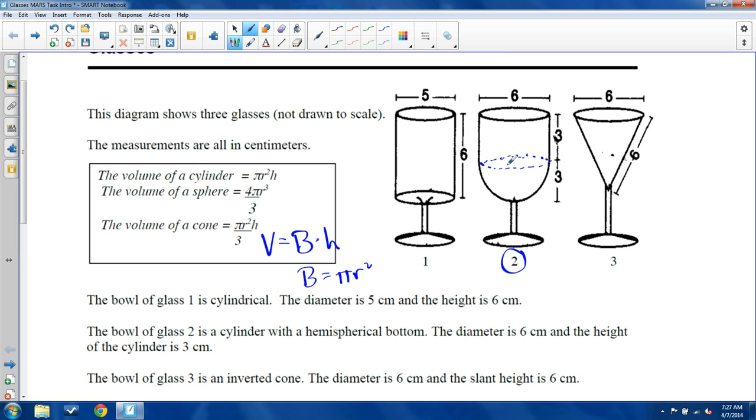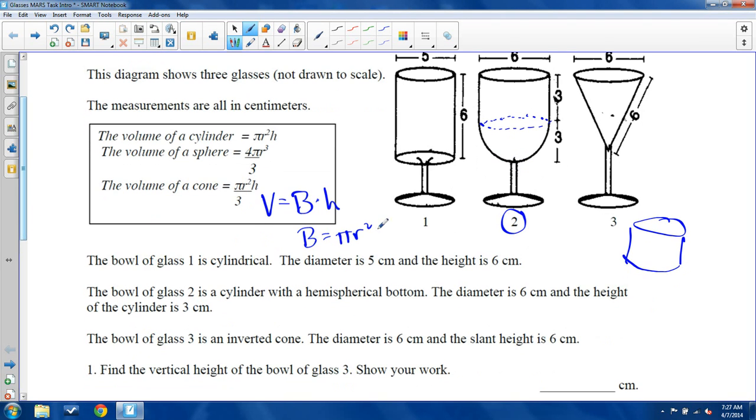So with this one right here, I'm looking at two different objects. I'm looking at a cylinder on top, like that, and then I'm looking at half of a sphere on the bottom. So if you think of a sphere, like a 3D circle, I'm only taking half of it, just that bottom portion.